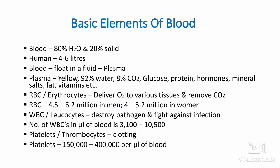As a start-up of this video, we should know about the basic elements of blood. Blood is actually a tissue. It is thick because it is made up of a variety of cells with different jobs. In fact, blood is about 80% water and 20% solid. Most people have about 4 to 6 liters of blood.